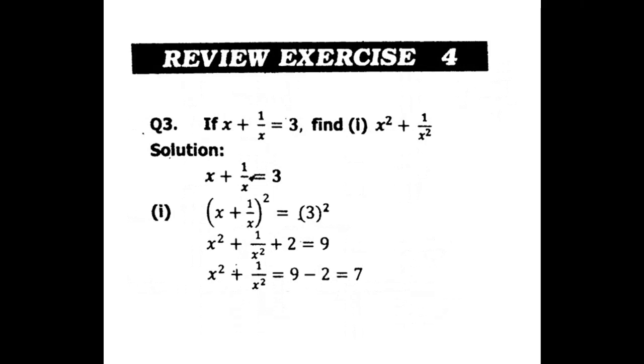For question number three, if x plus one over x equals three, we have to find the value of x squared plus one over x squared. So taking square on both sides, x plus one over x whole square equals three squared.